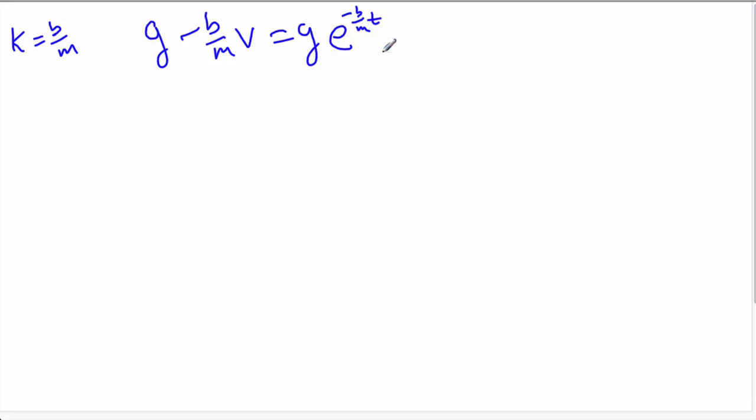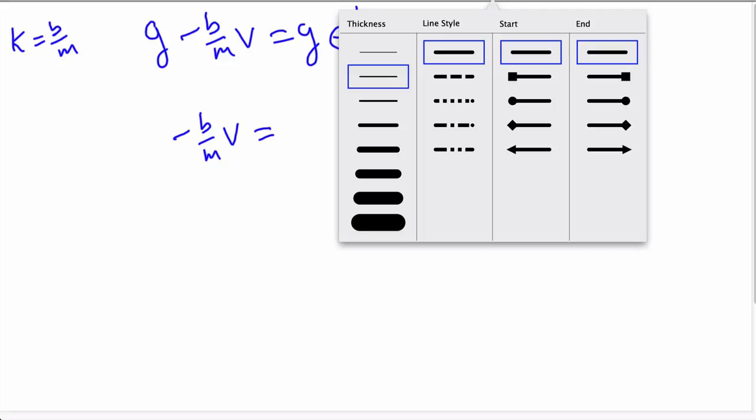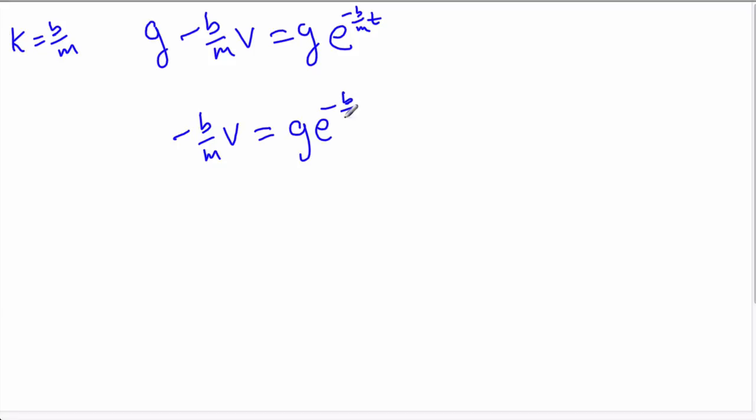Still not a beautiful form. Let's clean it up even more. We're going to subtract g from both sides. Now we've got g e to the negative b over m times time minus g. Let's multiply both sides by negative 1. So now we've got b over m times velocity equals, and I'm going to flip this expression around. So now we've got g times 1 minus e to negative b over m times time. I multiplied by negative 1, and I factored out the g.